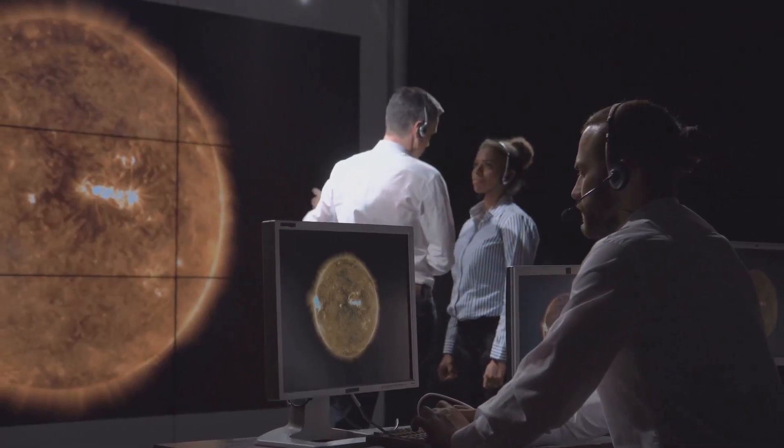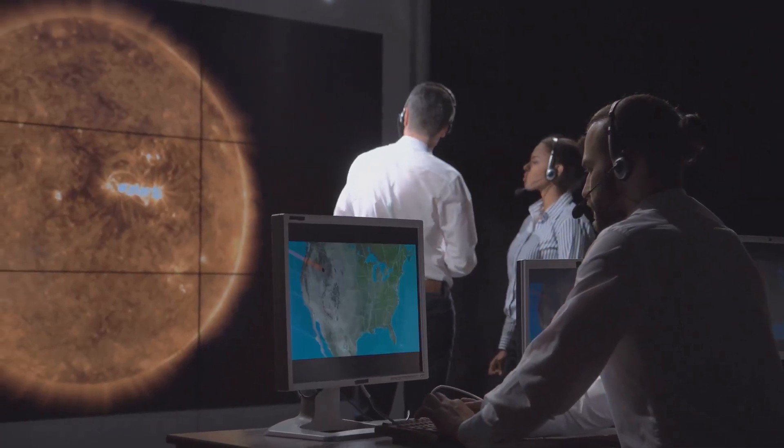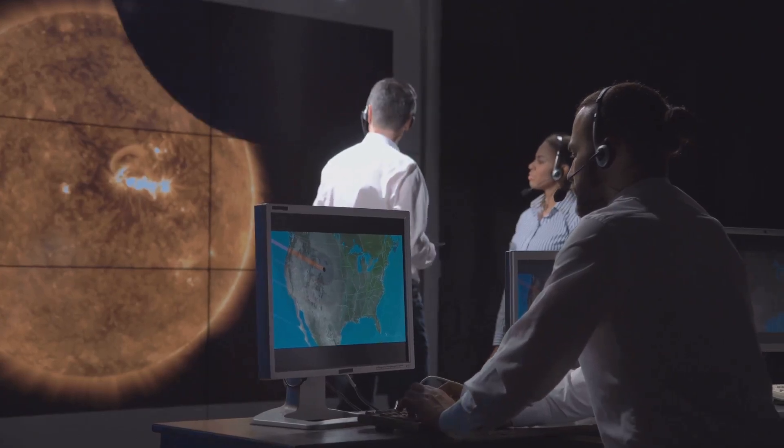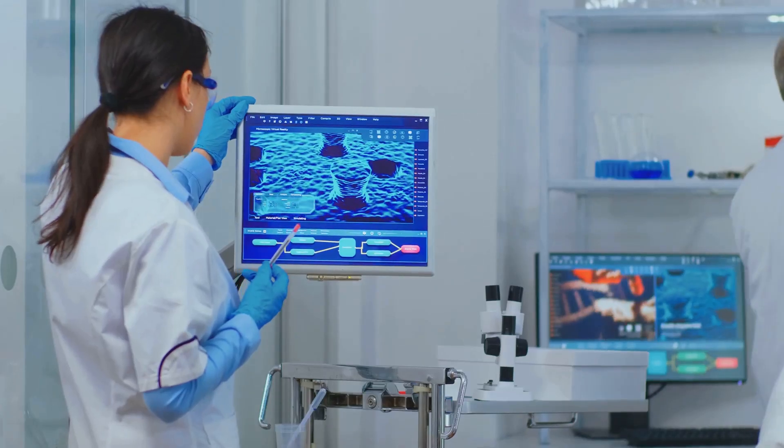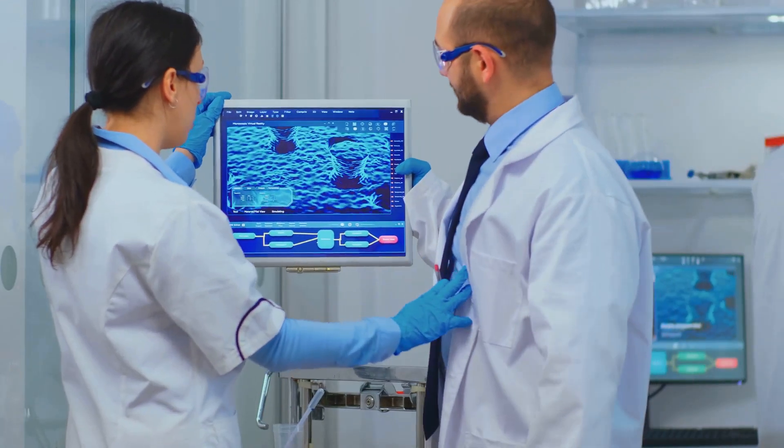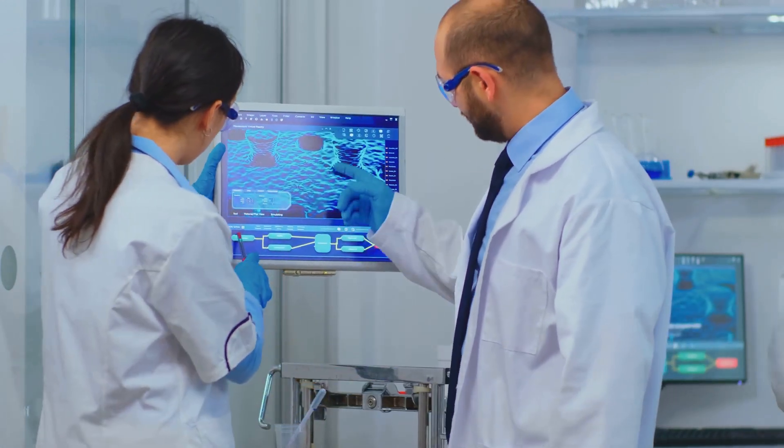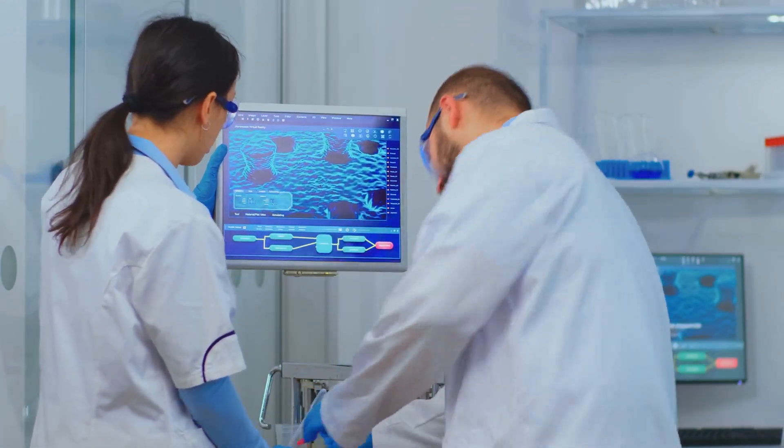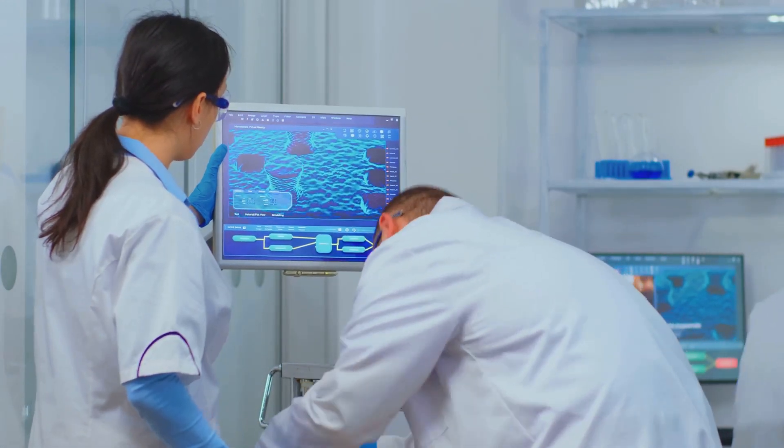By carefully measuring these tiny movements, astronomers can infer the presence of an orbiting planet. This method has been particularly useful in finding planets that are too close to their stars to be detected by the transit method.